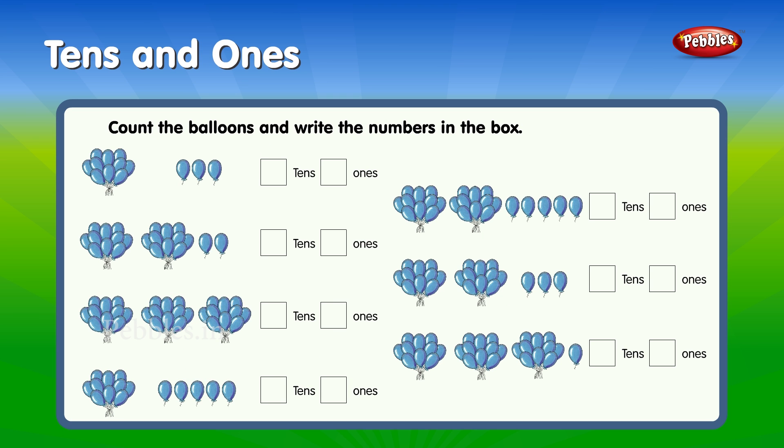Count the balloons and write the numbers in the box. One ten, three ones. Two tens, two ones. Three tens, zero ones. One ten, five ones. Two tens, five ones. Two tens, three ones. Three tens, one one.